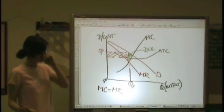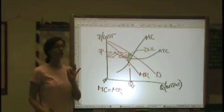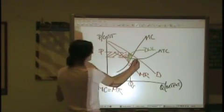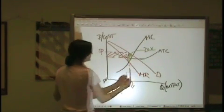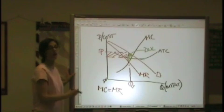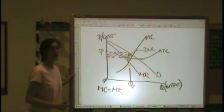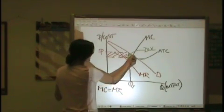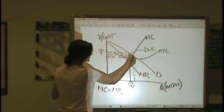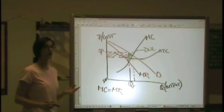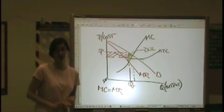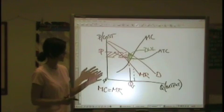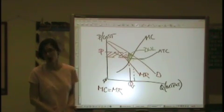Now, what does that mean? If we were productively efficient, we would be at the minimum of our ATC curve — we're not, because we're producing at a level that's too low. If we were allocatively efficient, we would be at least at this level — and we're not. So we are neither productively nor allocatively efficient in a monopoly. Quantity is too low, price is too high. That's the problem.